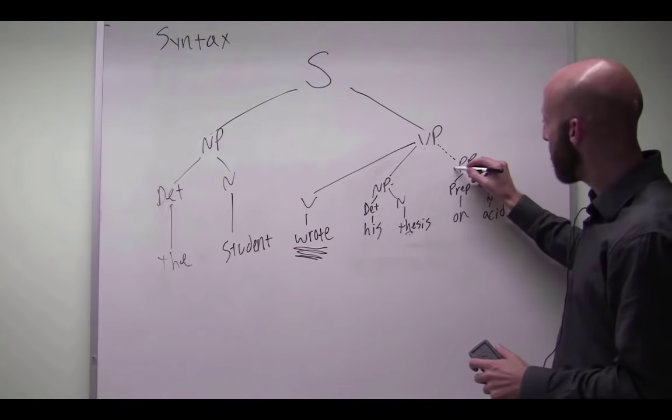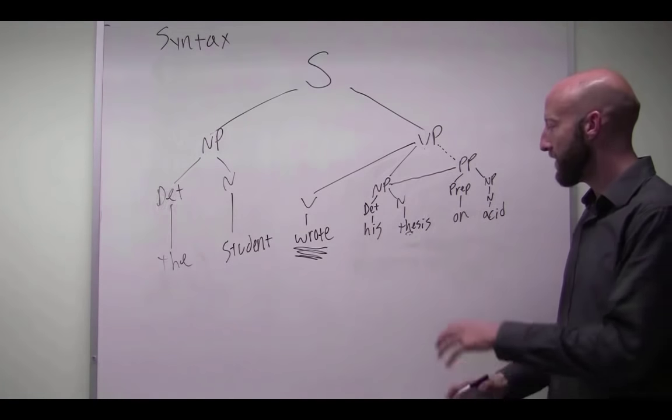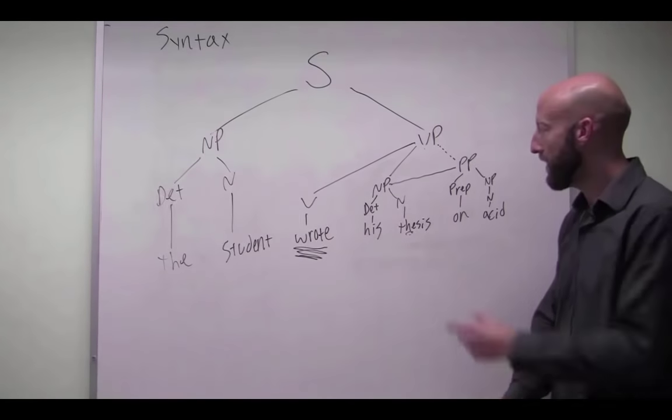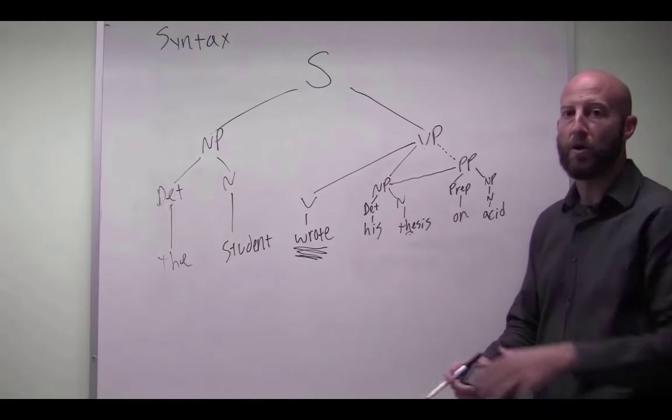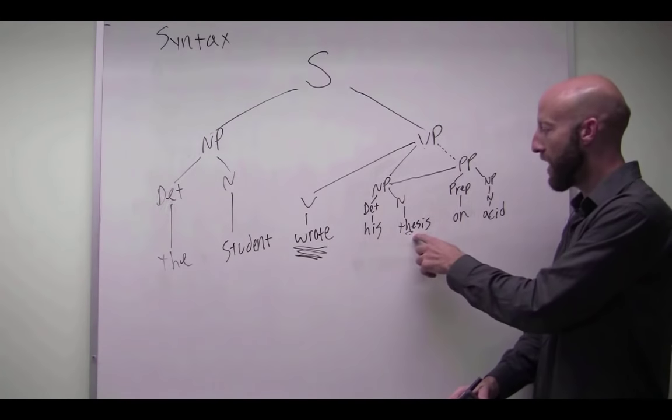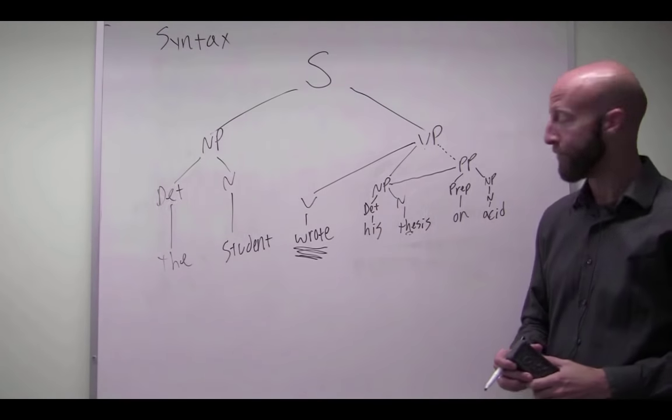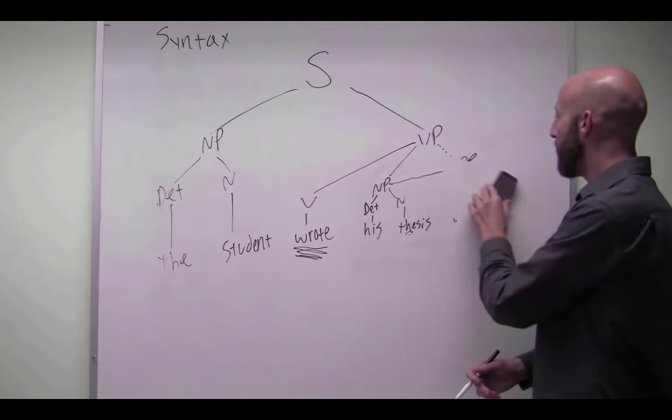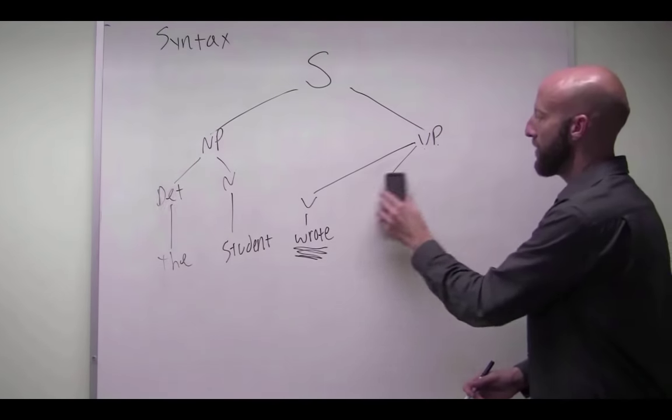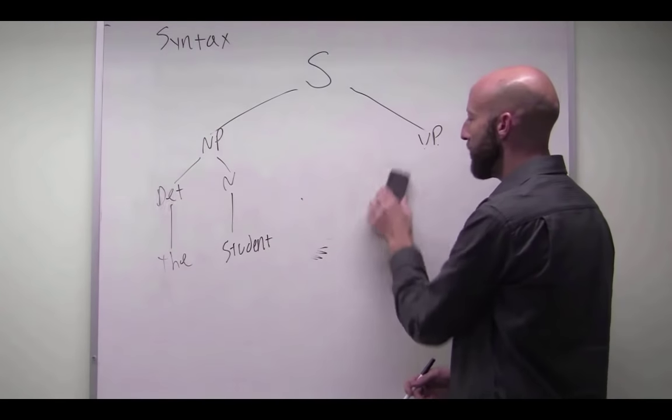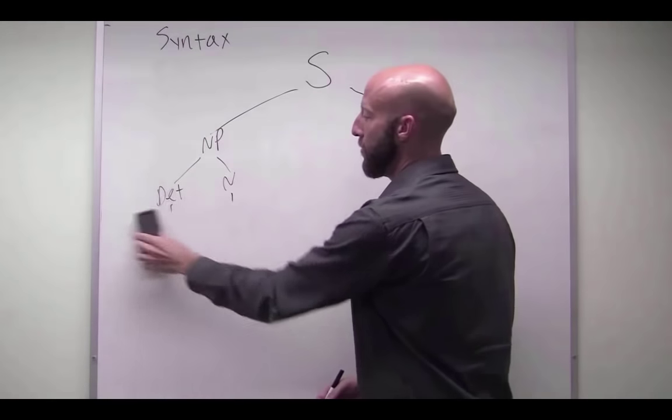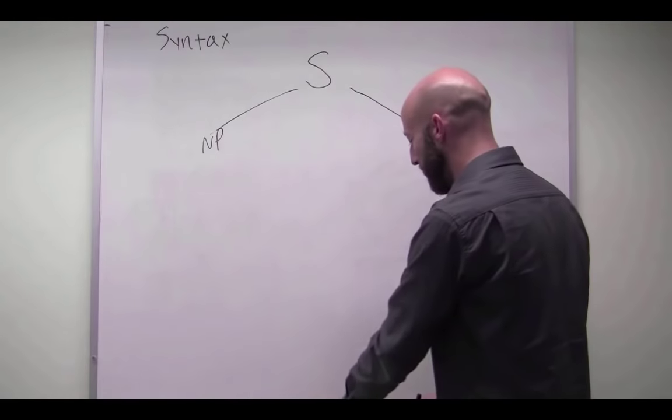Whereas on the other meaning, where his thesis was about acid, then we can just connect it to this node here because we're only describing the thesis, not how he wrote it. So those are two really classic examples of ambiguous utterances in English that you can structurally disambiguate by drawing tree structures in English.